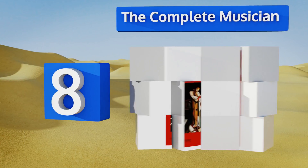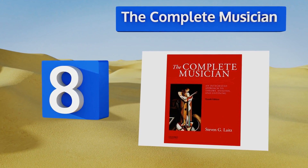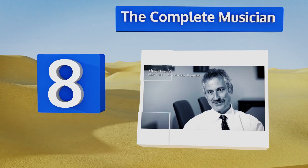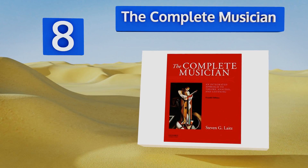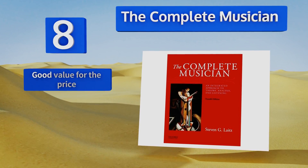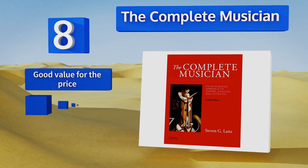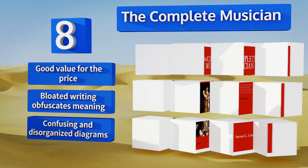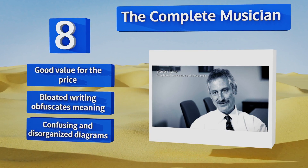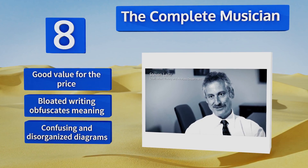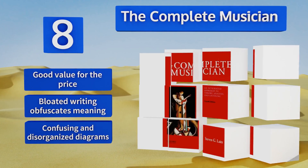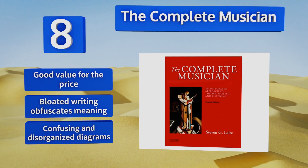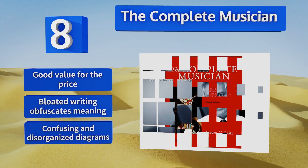Coming in at number eight on our list, at a whopping 960 pages, The Complete Musician is a comprehensive tome studied in some of the world's most prestigious conservatories. However, it often breaks with traditionally accepted nomenclature, inventing terms that may confuse students already versed on the subject. It is good value for the price, but the bloated writing can obfuscate its meaning and the diagrams are confusing and disorganized.